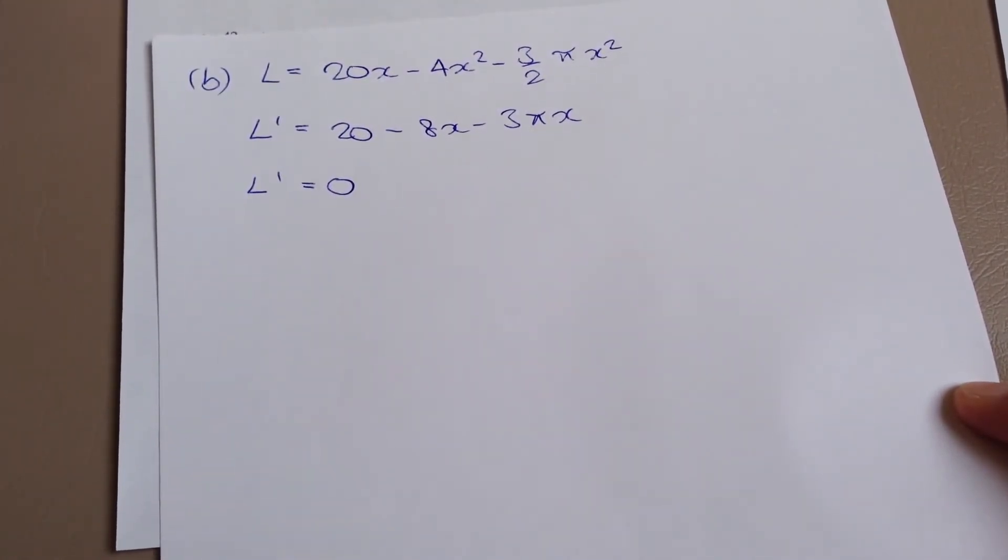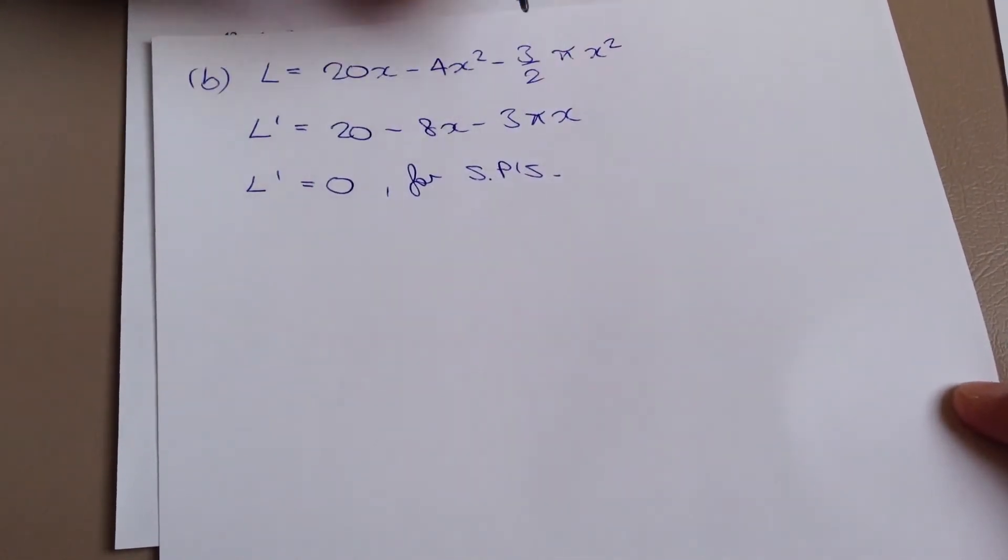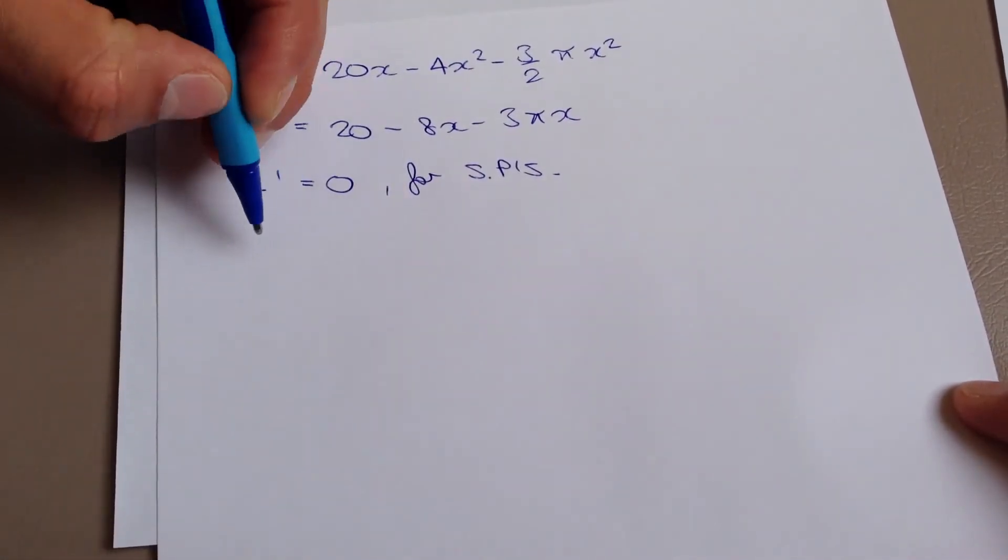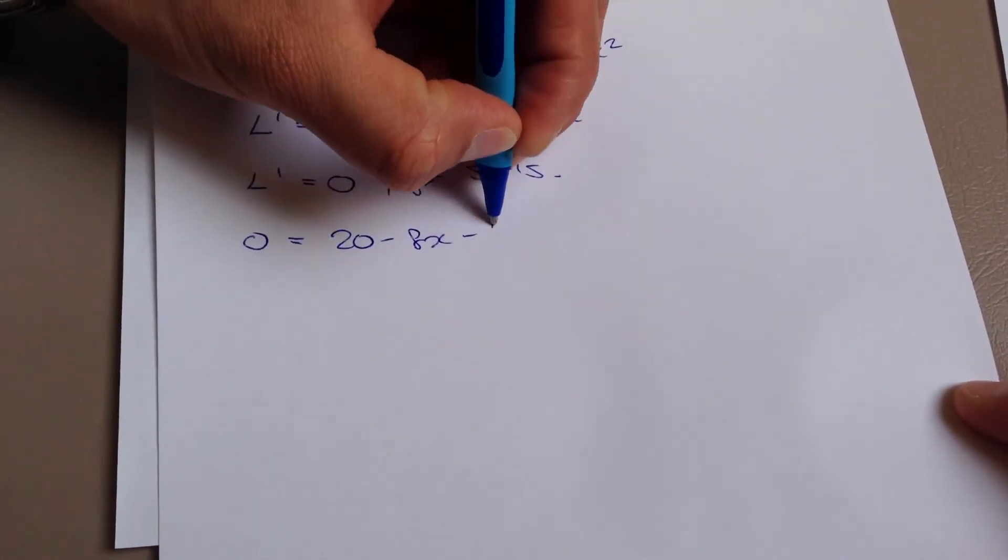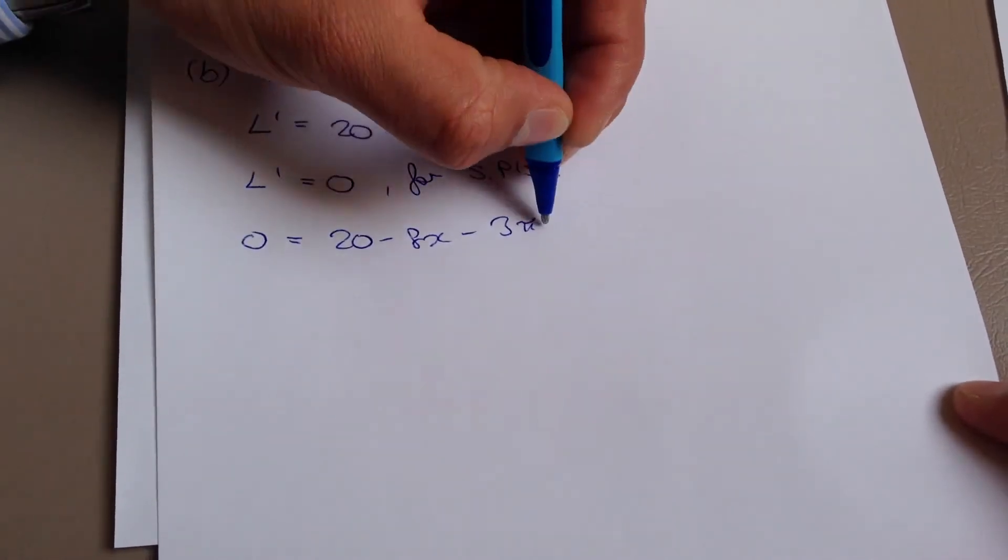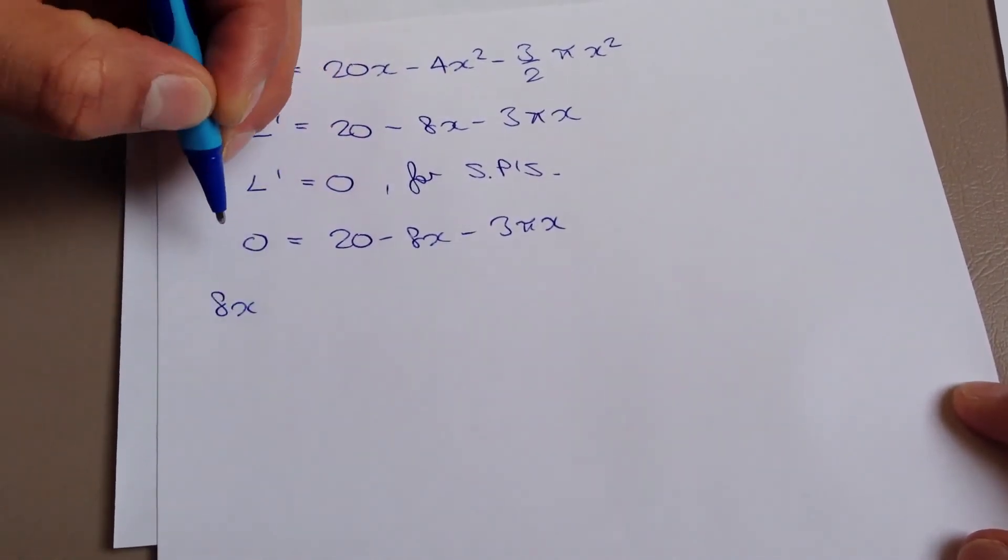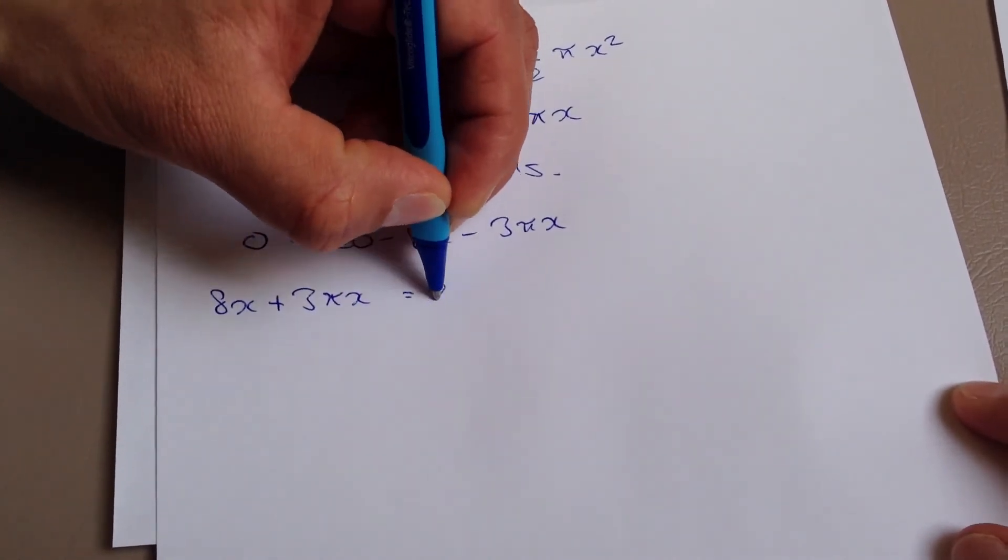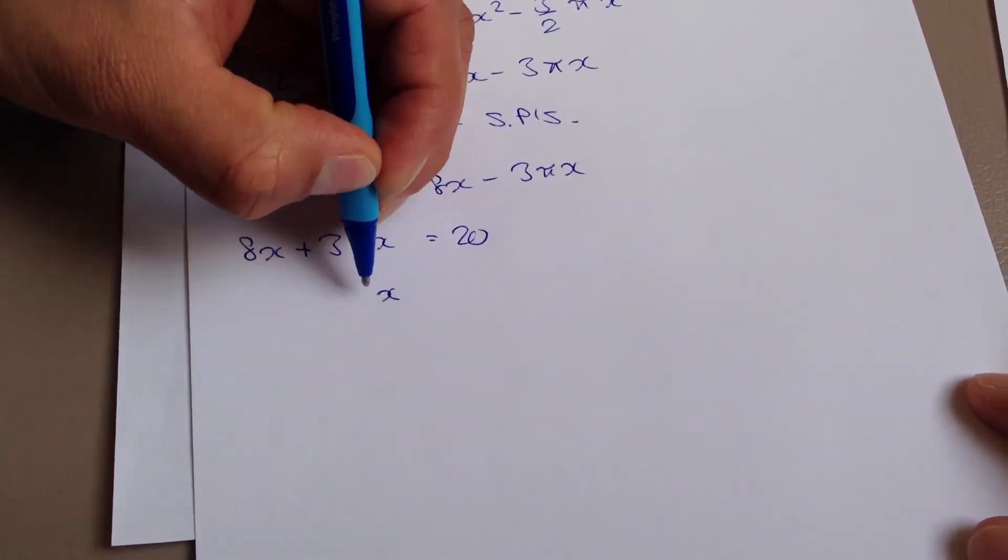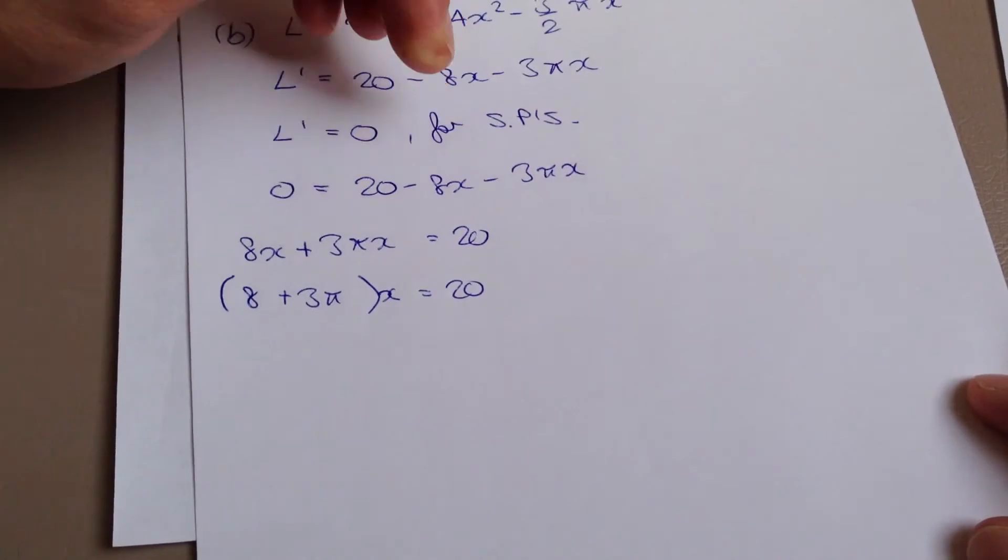So for stationary points, l dashed x equals or l dashed equals zero for stationary points. And there is not just one correct way to write this statement. There are numerous ways as long as you're getting the gist of it. So, that will be zero equals 20 minus 8x minus 3 pi x. Now I've got minus 8x and a minus 3 pi x. Let's take those two over to the other side. And that will become positive 8x, positive 3 pi x. And that will equal 20. I have x as a common factor that I can take out, which will leave me with 8 plus 3 pi. And of course, this equals 20.